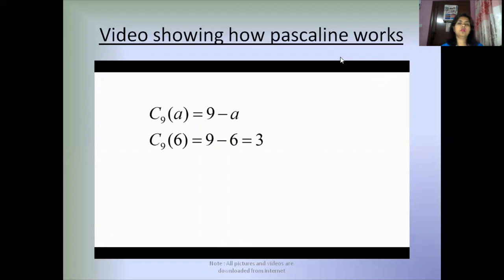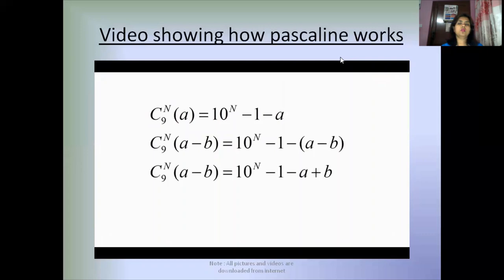In a calculator with n dials, the nines complement of a number a is 10 raised to the nth power minus 1 minus a. Therefore, the nines complement of a minus b is 10 to the nth power minus 1 minus a minus b, which equals 10 to the nth power minus 1 minus a plus b, which equals the nines complement of a plus b.